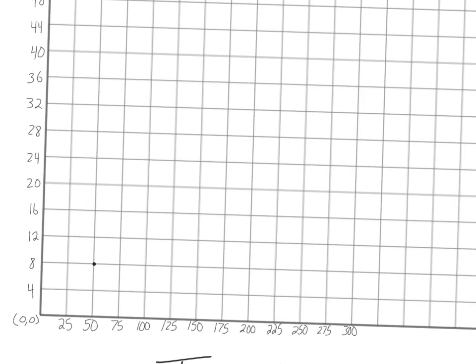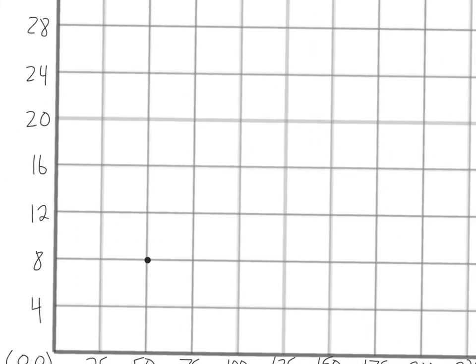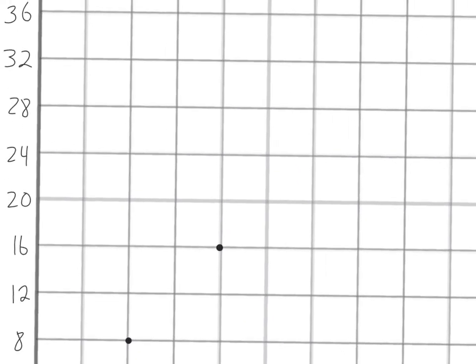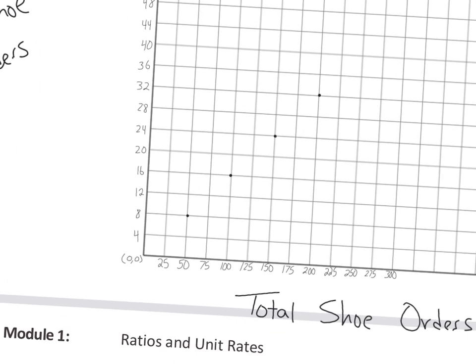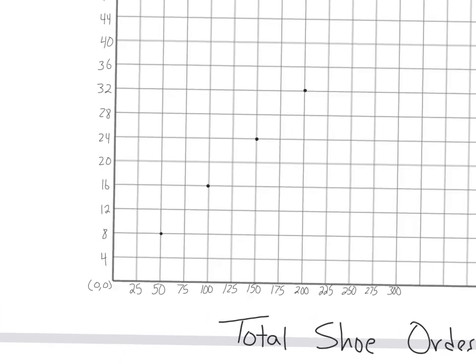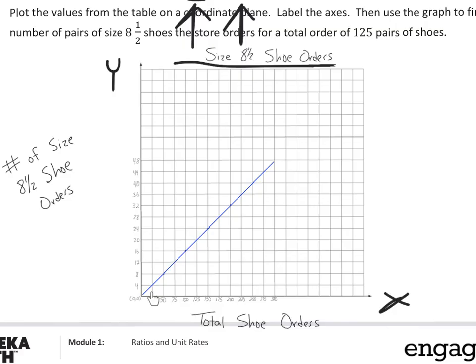So I've got 100 to 16. I've got 150 to 24. And I have 200 to 32. So at this point, all I want to do is connect the dots. So I've now connected my dots. You can see there's 50 to 8, 100 to 16, 150 and 24, and then 200 to 32.